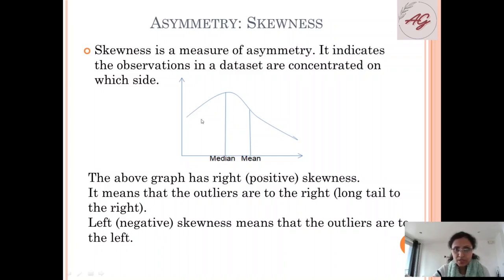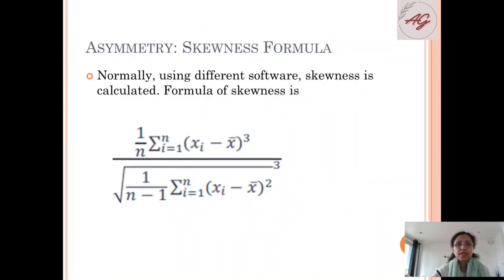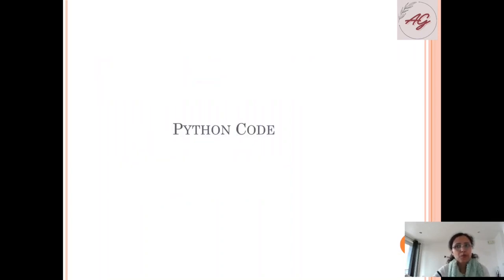Now left skewness means that outliers are to the left. If the graph is just opposite - this long tail is on this side - then it will be negative skewness. In skewness the formula is like this. Normally we can calculate skewness using different software.